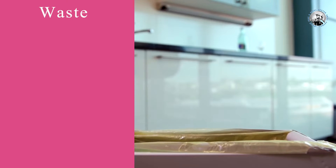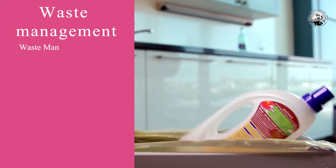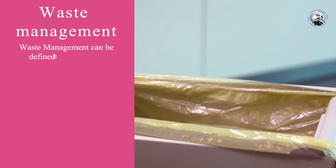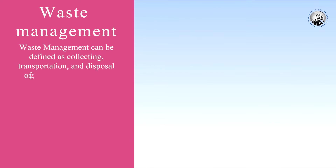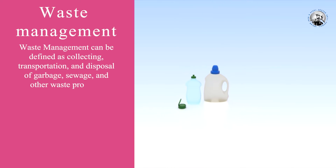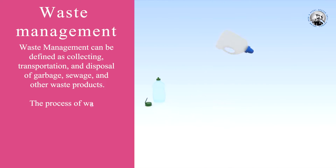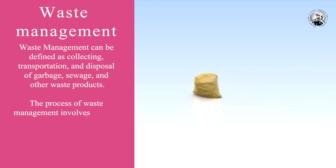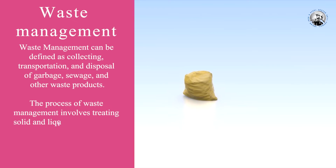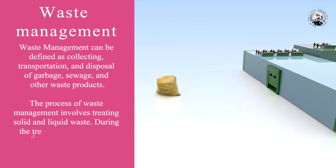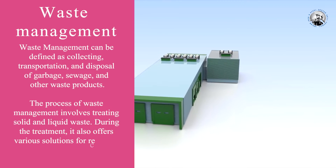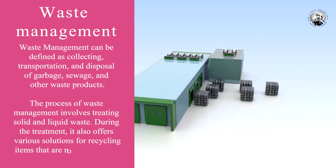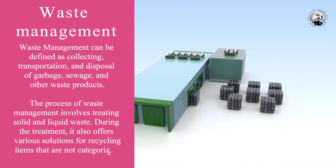Clean clutter. Cardboard, shrink wrap, leftover production materials, and broken wooden pallets are general forms of clutter in a workshop. Dispose of these materials rather than stacking them if not required. Waste management can be defined as the collecting, transportation, and disposal of garbage, sewage, and other waste products. The process of waste management involves treating solid and liquid waste, and also offers various solutions for recycling items that are not categorized as trash.